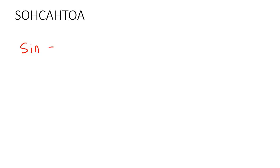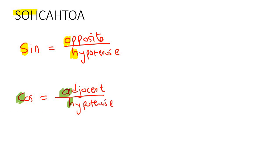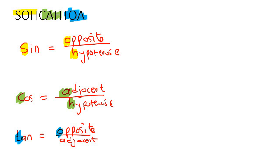Let's quickly remind you what SOH-CAH-TOA means, just as a recap. We know that sin stands for opposite over hypotenuse — that's the S-O-H. Cos is adjacent over hypotenuse — that's the C-A-H. And tan is opposite over adjacent — that's the T-O-A.